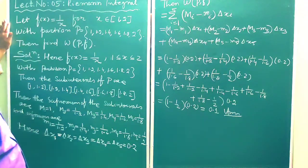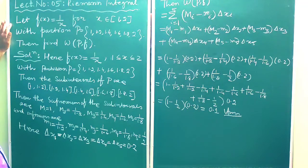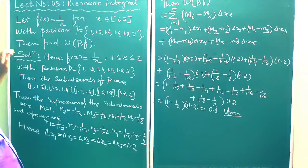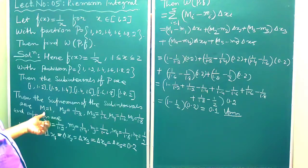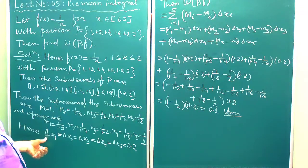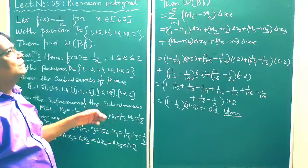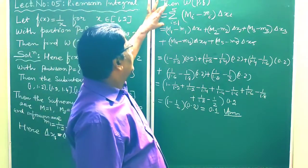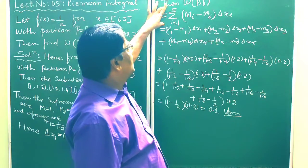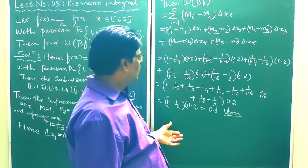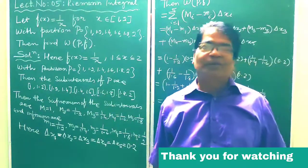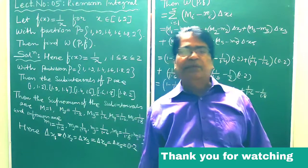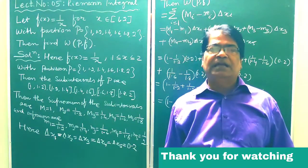So here, f(x) = 1/x with x ranging from 1 to 2, and the given partition. We found the sub-intervals, wrote the supremum and infimum values, noted the length of each sub-interval as 0.2, and computed the oscillatory sum Σ(M_i − m_i)·Δx_i from i=1 to 5, getting 0.1. With this, today's topic is completed. I shall meet you with a new topic in my next class. Till then, goodbye.